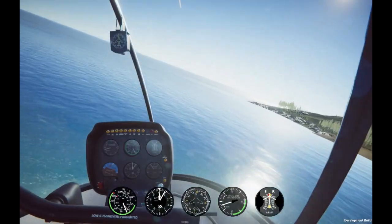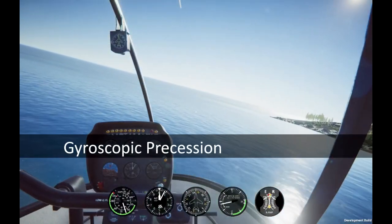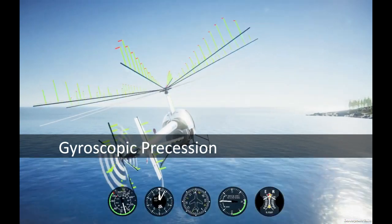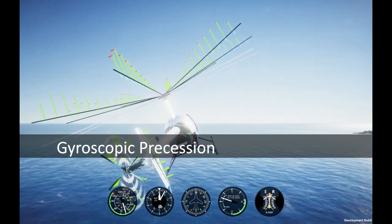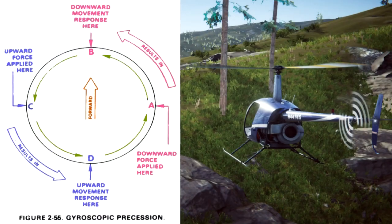Let's start with the first topic: gyroscopic precession. Gyroscopic precession, also known as phase lag, is a phenomenon occurring in a rotating body. Any force applied at a point of the rotor disc will manifest rotationally 90 degrees later in the direction of the rotation.